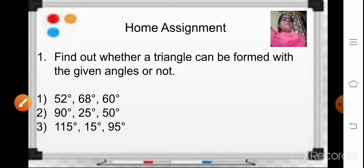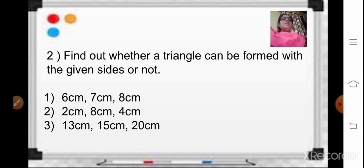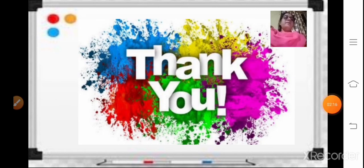Based on the properties of triangles, homework is assigned. You have to find out whether a triangle can be formed with the given angles — this is according to the first property. The second sum asks you to find whether a triangle can be formed with the given sides. With this we complete chapter 12. Meet you again in the next class with a new chapter. Thank you students, bye-bye.